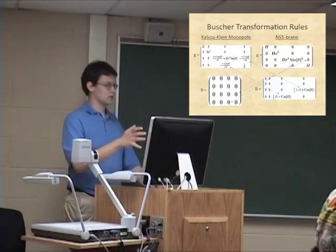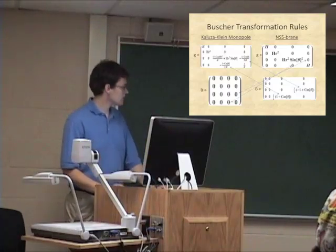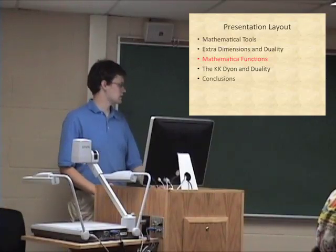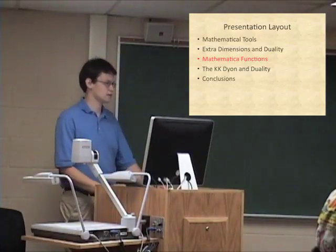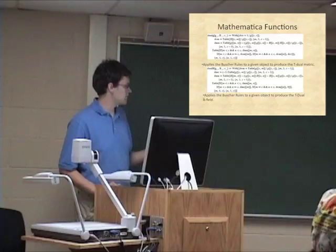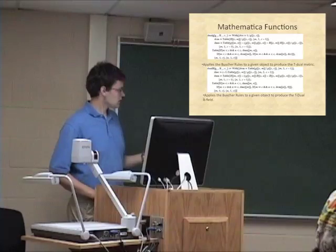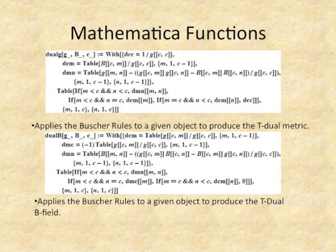The Buscher rules are just a set of rules that lay out exactly how, given a metric and a B field for one object, you can switch between the two. Here's where I actually start doing some of my own work. This next section shows Mathematica functions that I myself made to implement these Buscher rules. The first one, labeled dual G, applies those Buscher rules to a given object to produce the T-dual metric of it. The second one does the same thing but produces the T-dual B field for any object.